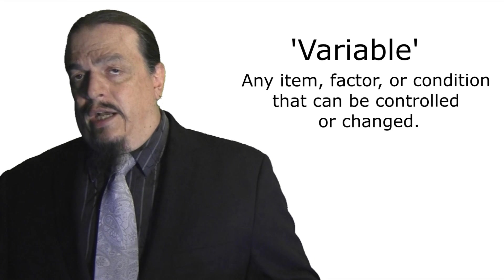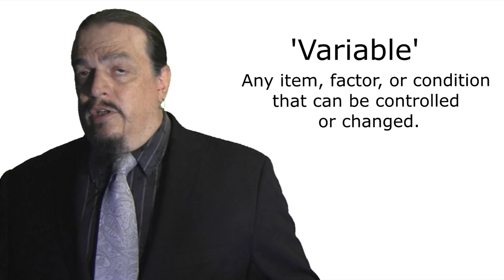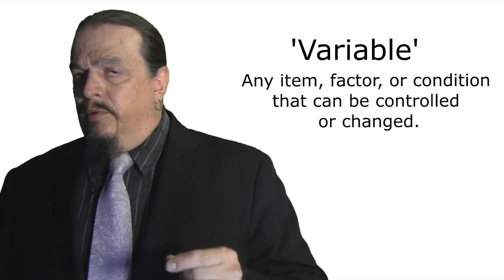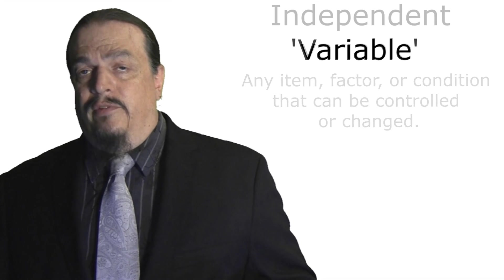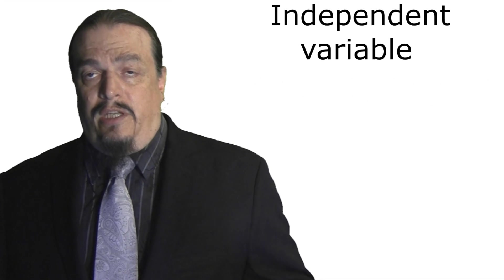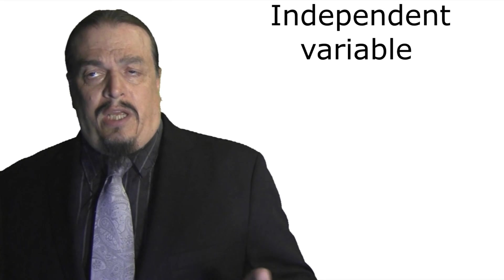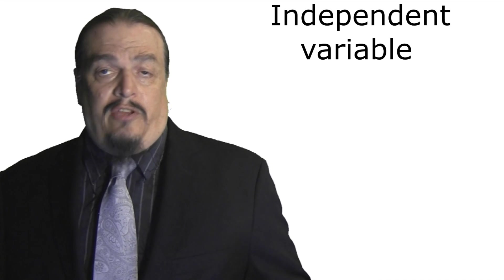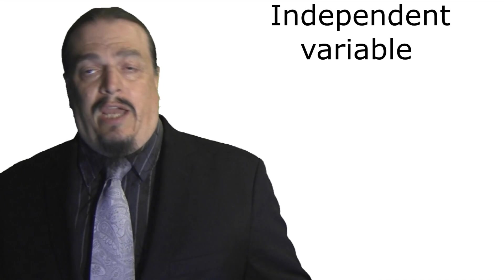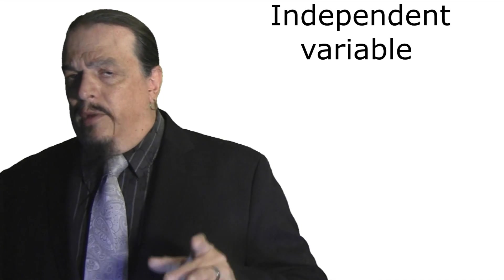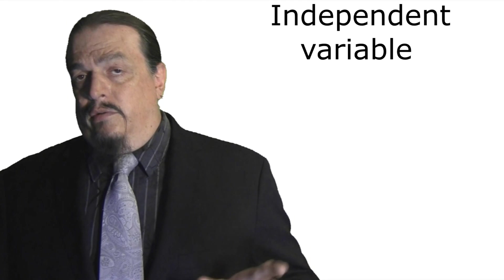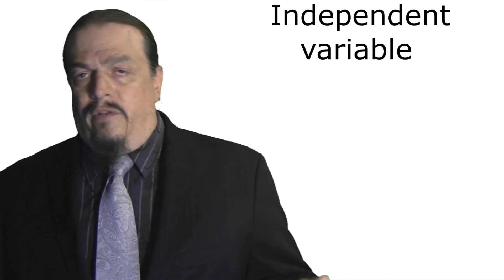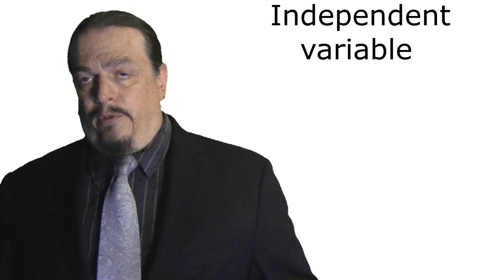That is, any item, factor, or condition that can be controlled or changed. So in the plant experiment, there are two types of variables. The independent or manipulated variable is the variable that is changed in an experiment — in this case, the amount of water added to your test plants. Normally there's only one independent variable to avoid confusion about what effect it has on the dependent variable.